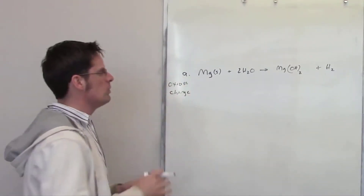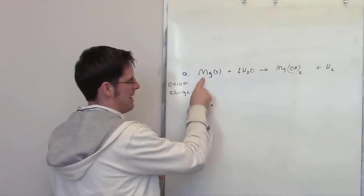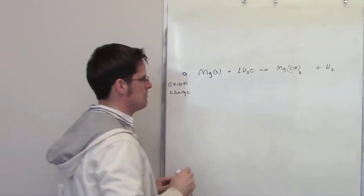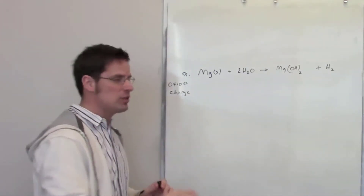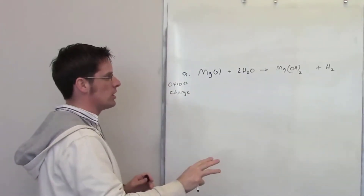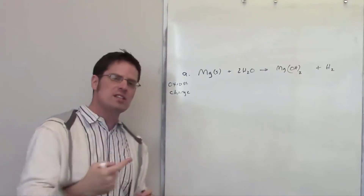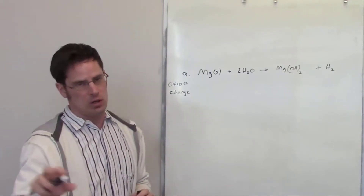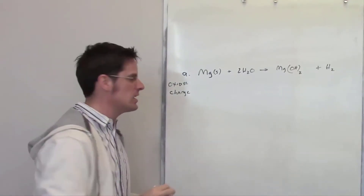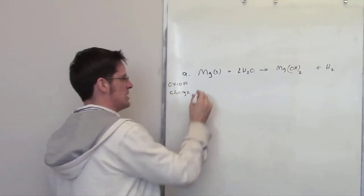We'll begin left to right. We've got magnesium — magnesium all by itself, no charge. What is its oxidation number? Well, as I've outlined earlier, when you have that scenario, it is zero.